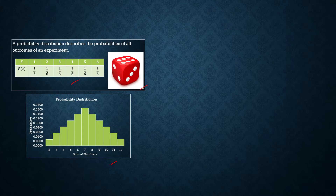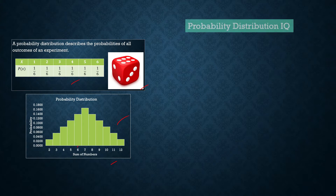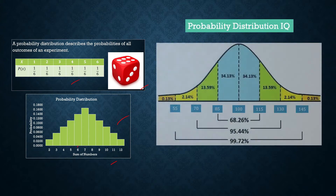What is the probability that in a throw of a pair of dice, the sum is going to be 6? We go to the Probability Distribution, look for 6, and it is approximately 14%, or 0.1400. Now let us bring in the Normal Probability Distribution — the example we have been using is the Probability Distribution of IQ.